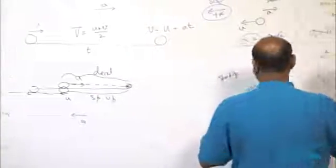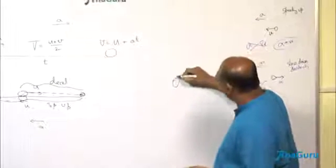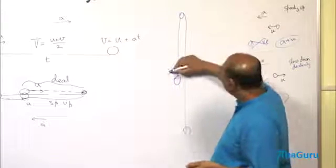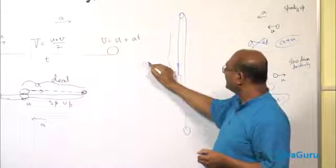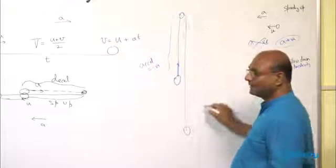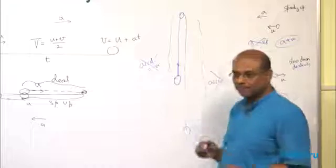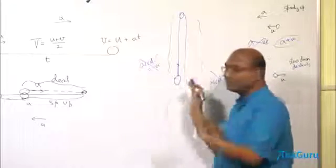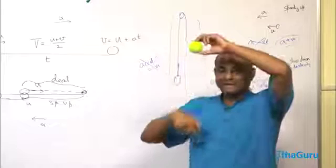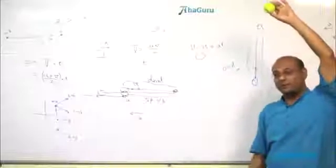In schools, people sometimes say that when a ball is thrown upward, acceleration is negative on the way up and positive on the way down. That is a wrong statement. When a ball goes up and comes back, its acceleration is 9.8 — roughly 10 — meters per second squared, directed downward throughout. At the topmost point, what is its acceleration? It is still 9.8 downward. It does not become zero just because velocity is zero.